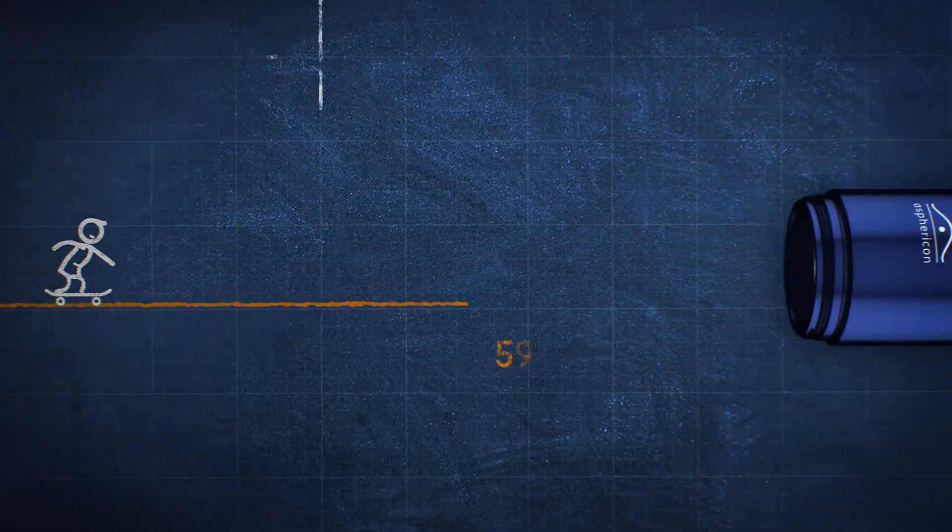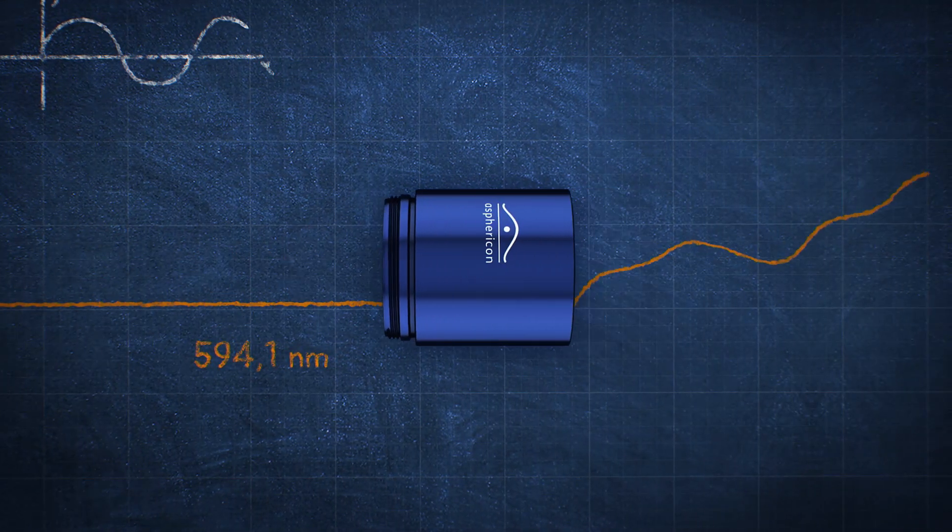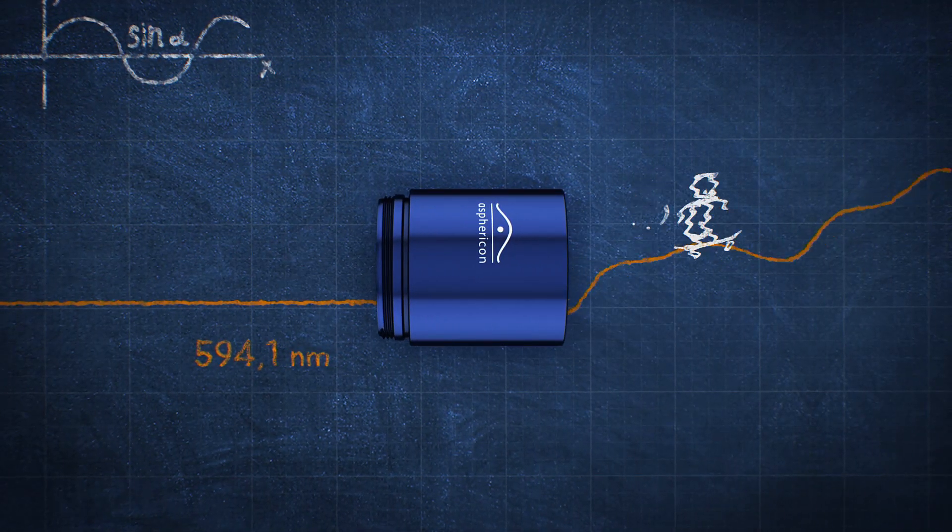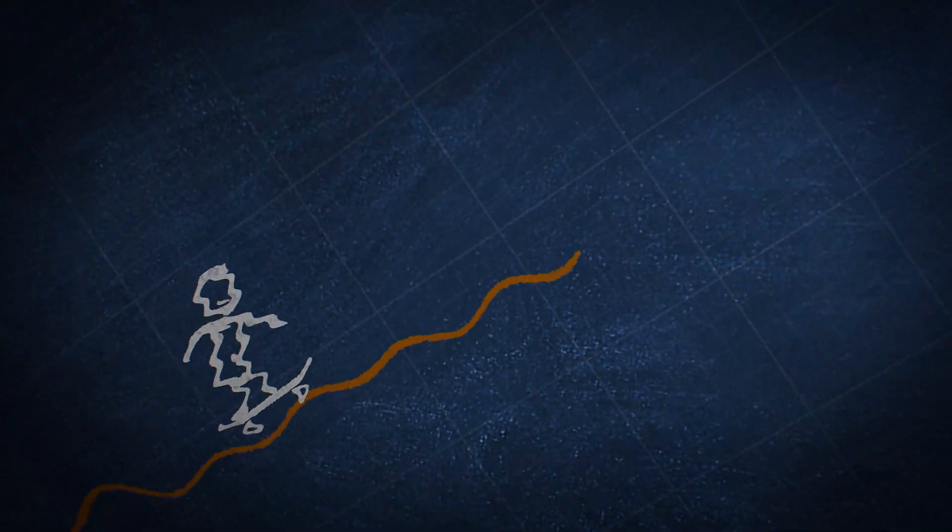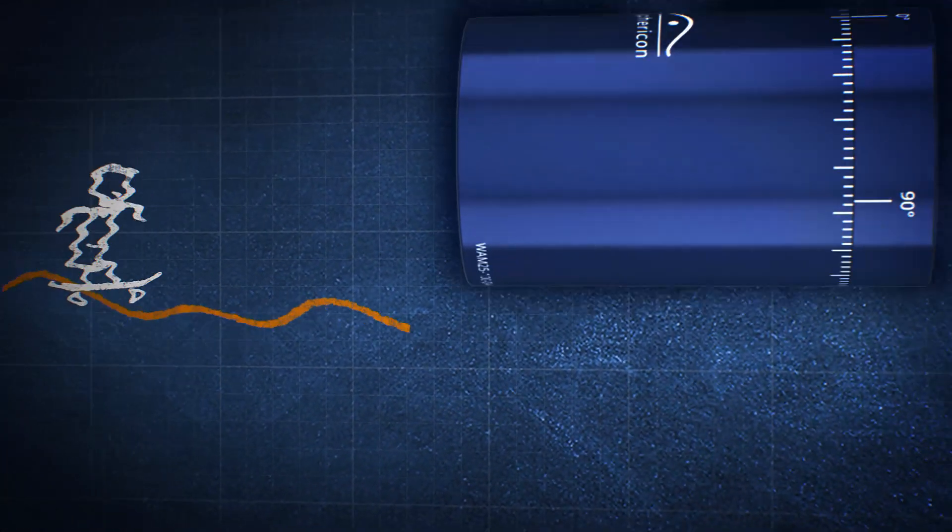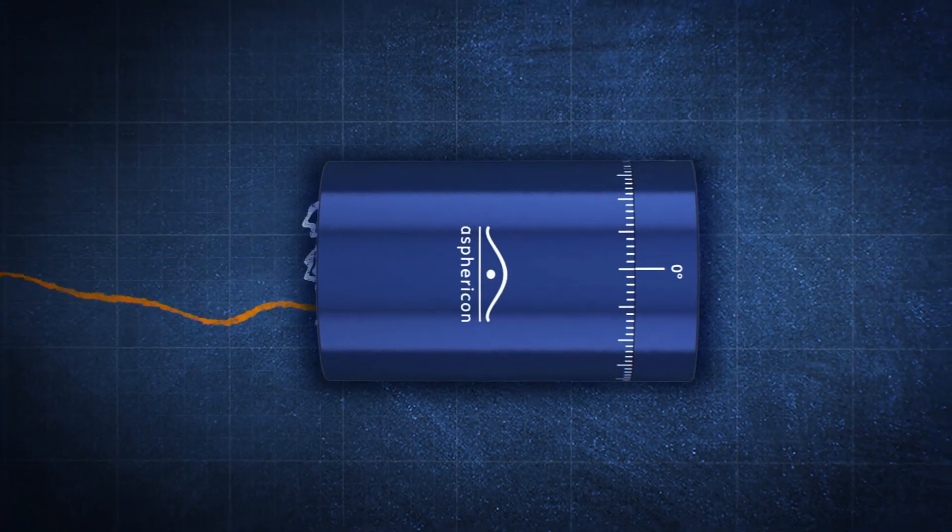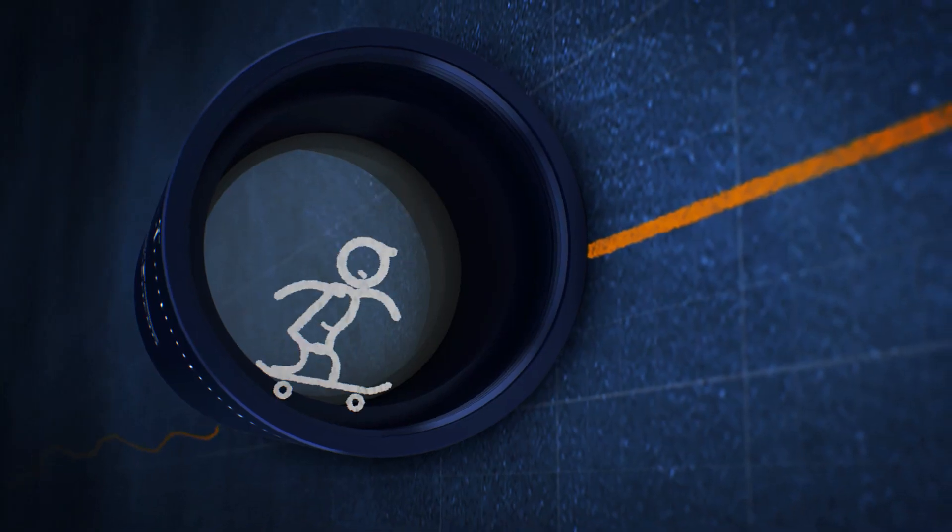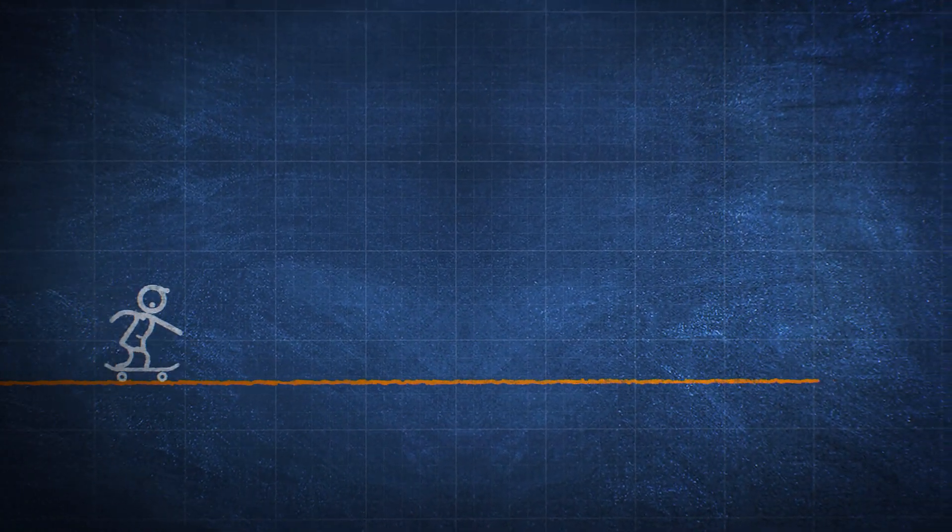But life can get bumpy. Imagine when using the beam expander outside its design wavelengths. But no problem for us. That's why we made the WaveAdapt. Optimized adaption to any wavelength from 500 to 1600 nanometer. Life has never been easier.